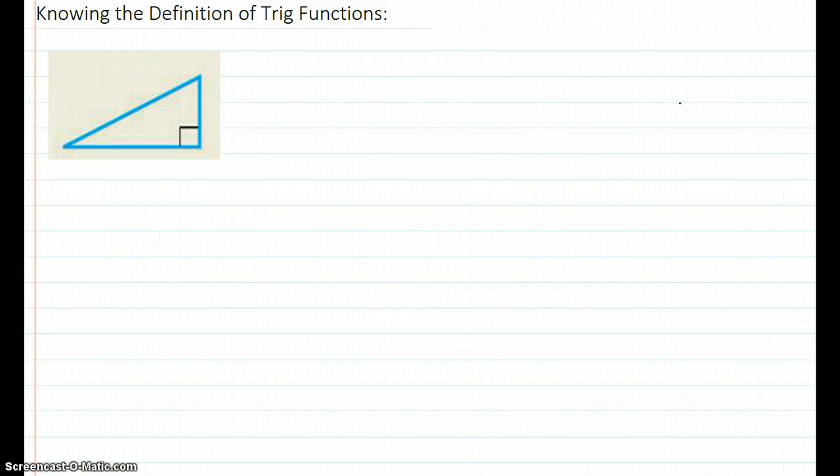This video goes over knowing the definition of the trig functions. What is a trig function anyway? It is the ratio of two sides of a right triangle in all the different combinations. So that's why I'm starting here with a right triangle. You know it's a right triangle because one side is 90 degrees and they signify that 90 degrees by the little box as you saw in the first couple of sections.